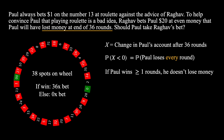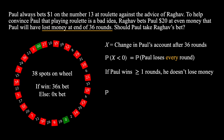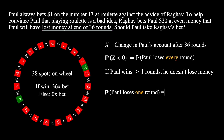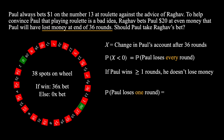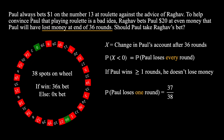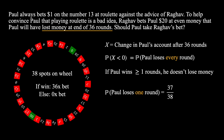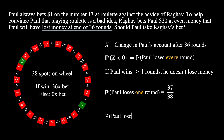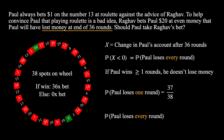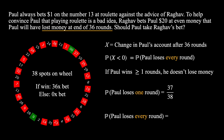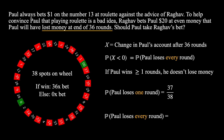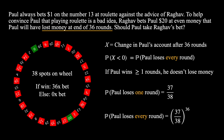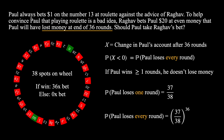To compute this, let's start by computing the probability that Paul loses one round. For any given round, he loses if the ball lands in 37 of the 38 spots. We can then compute the probability that Paul loses every round. Since all rounds are independent, we simply take 37 divided by 38 raised to the power of 36.